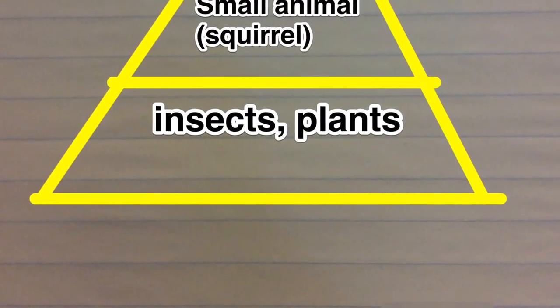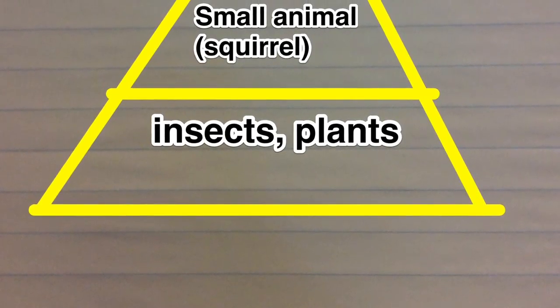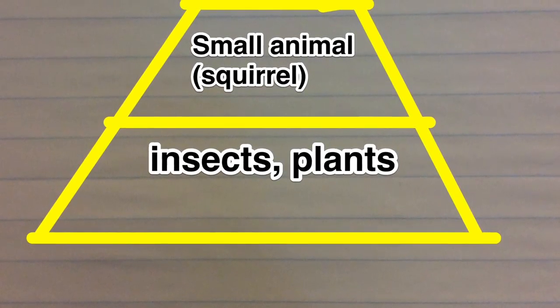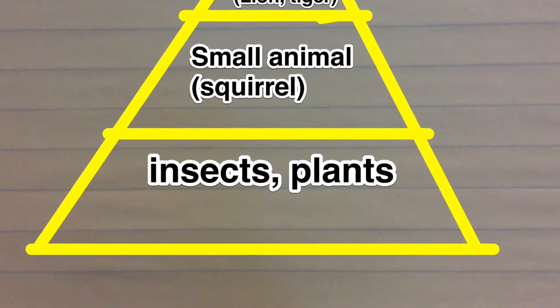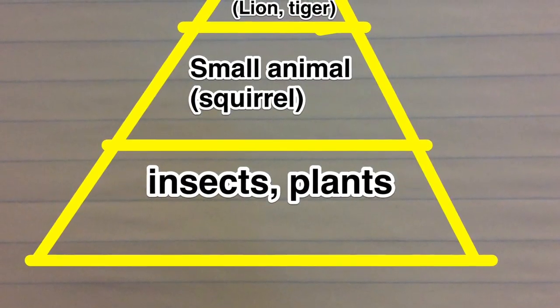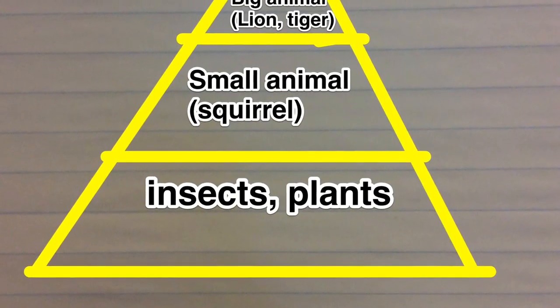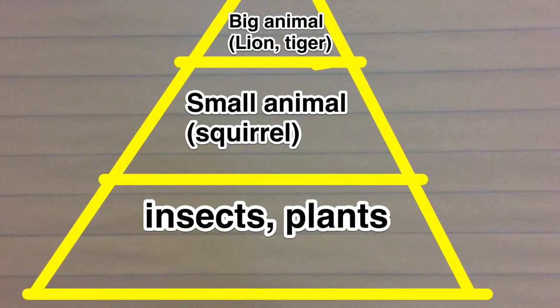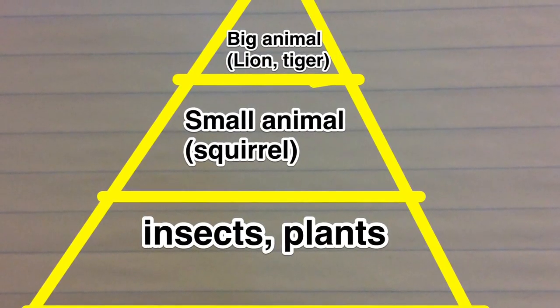Squirrel is important because squirrel is one part of the food pyramid. When squirrels disappear, plants will be all around the floor and big animals will die because there's no food for big animals to eat.